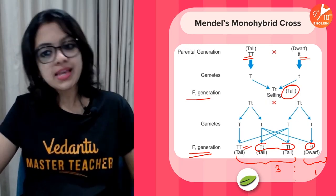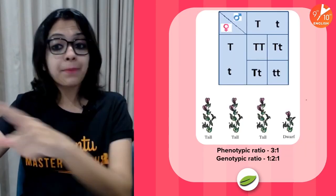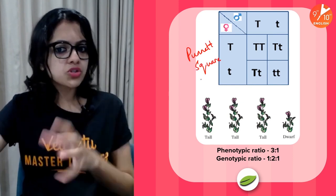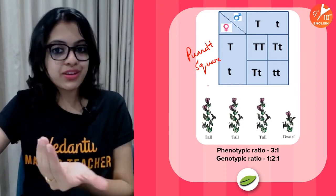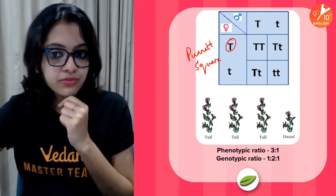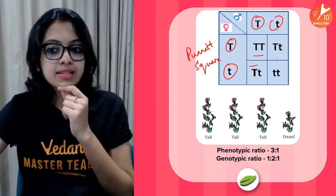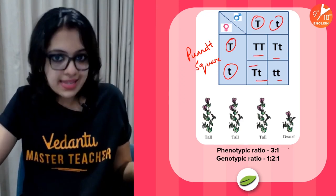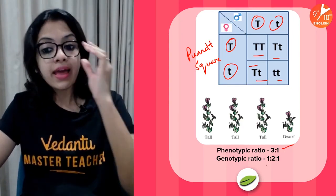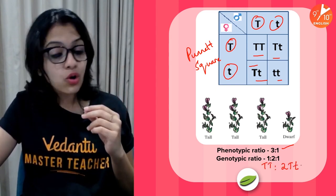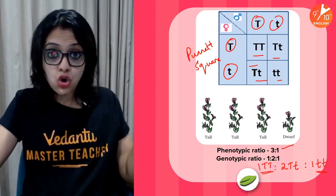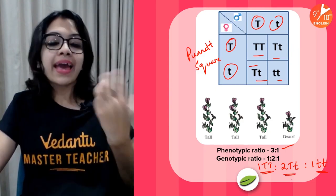Once you get the logic of this, the dihybrid cross will also be very simple. The Punnett square is a tool used to logically represent and work out different crosses — like cross multiplication, it's a neat tool. These are the female gametes, these are the male gametes, and these are the results of the progeny. Confirming: the phenotypic ratio in the monohybrid cross is 3:1 — 3 tall to 1 dwarf — and the genotypic ratio is 1 TT : 2 Tt : 1 tt, where TT and tt are homozygous tall and dwarf respectively, and Tt is heterozygous tall.